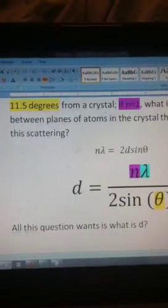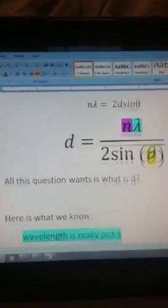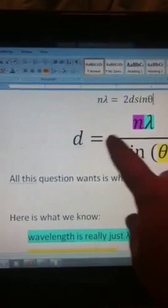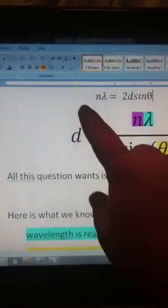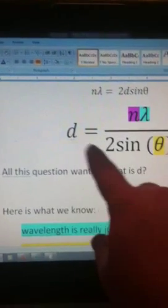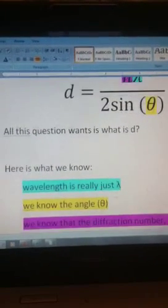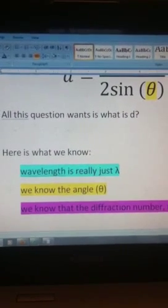Okay, cool. So all the question's asking is d, like I was saying earlier, so I solved it for d. Algebraically, you just divide this side by 2 over sine theta and this side by 2 over sine theta. And your result is this. So, what we know from reading the word problem is we know that the wavelength is really just lambda.